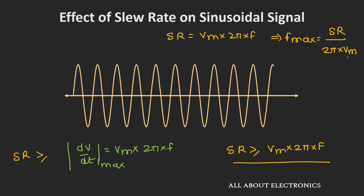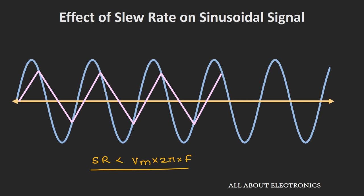Do not confuse this with the unity gain bandwidth of the op-amp. The unity gain bandwidth is defined for small signals in the millivolt range, while power bandwidth is defined for large signals in the volt range. For small signals, when the input frequency exceeds the unity gain frequency, you will see attenuation in the output. For large signals, when the input frequency exceeds the power bandwidth, you will see distortion in the output.